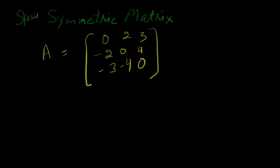Skew-symmetric matrix is a little different from symmetric matrix. Skew-symmetric matrix means if any matrix transpose equals the negative of the matrix, then that matrix is skew-symmetric. Let's see how.